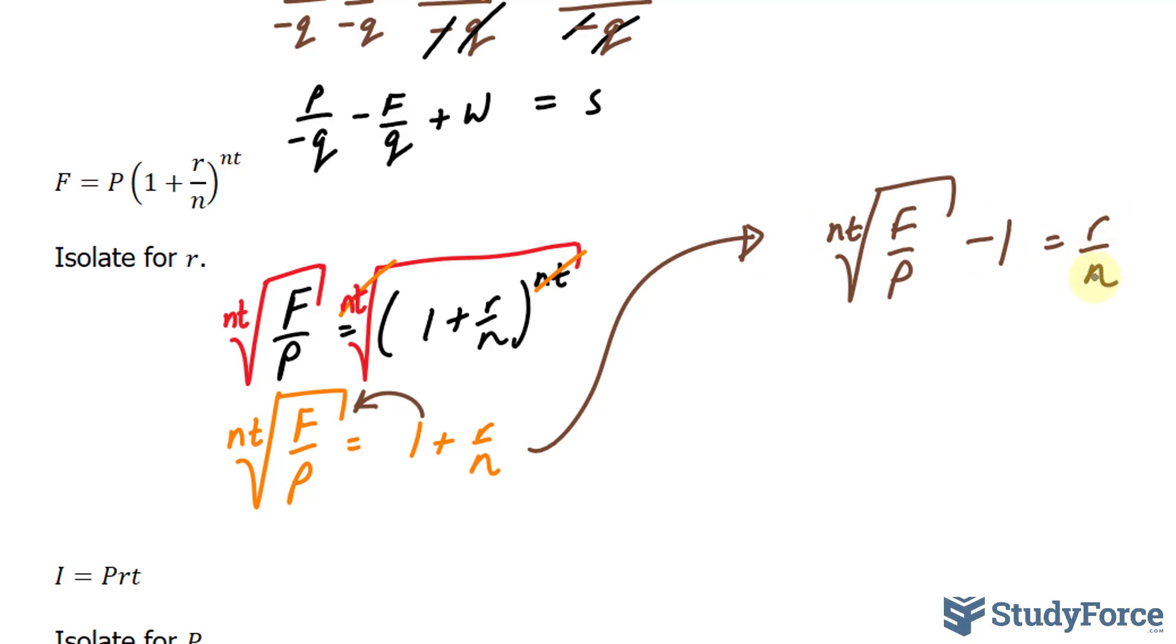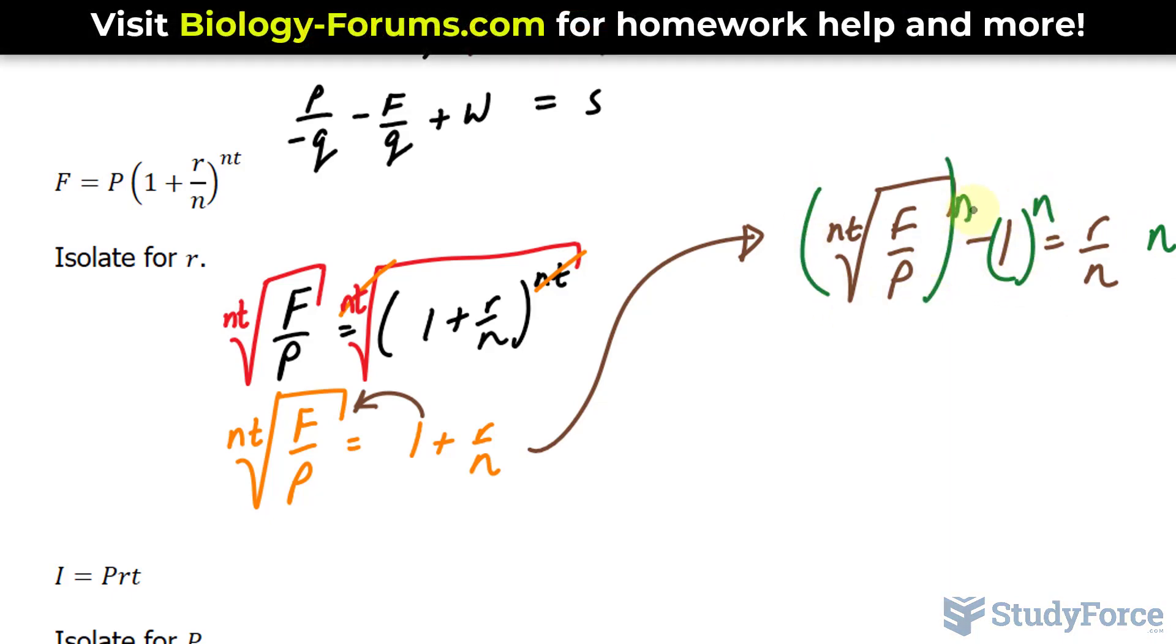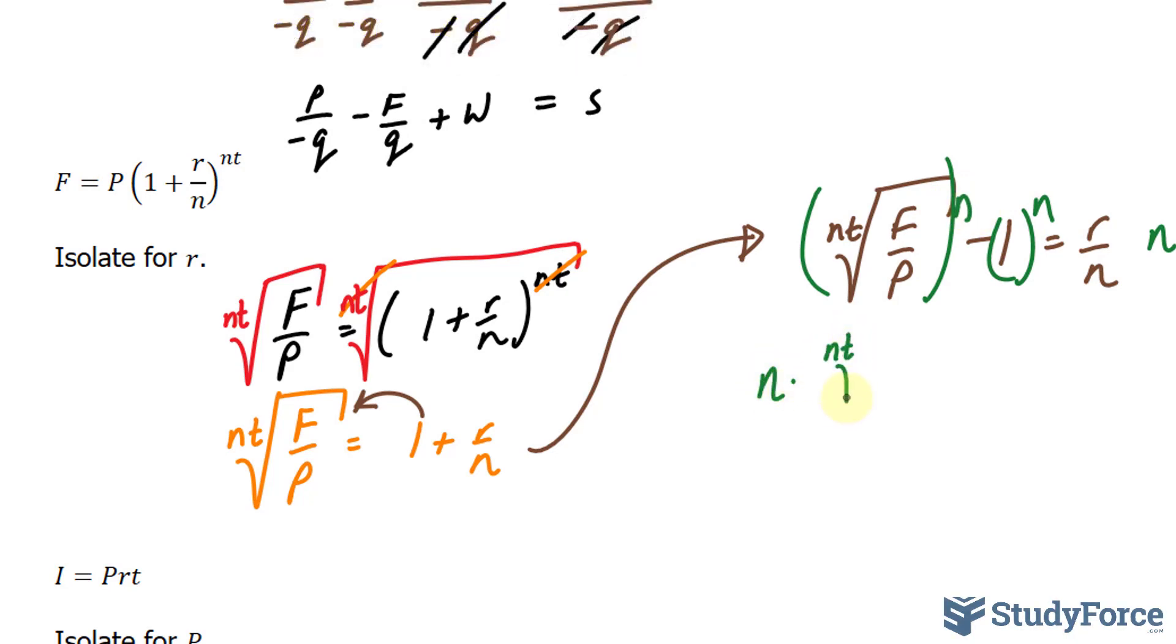Our last step is to get rid of this n that's in the denominator position, and I can multiply every term by the common denominator, which is n. So, multiplying this by n, multiplying this term by n, and this term by n, here's what I get. n times nt as the index, f over p, minus 1 times n is n, don't confuse this as a power, I just wrote it there for convenience, is equal to R. That's the equation for R.